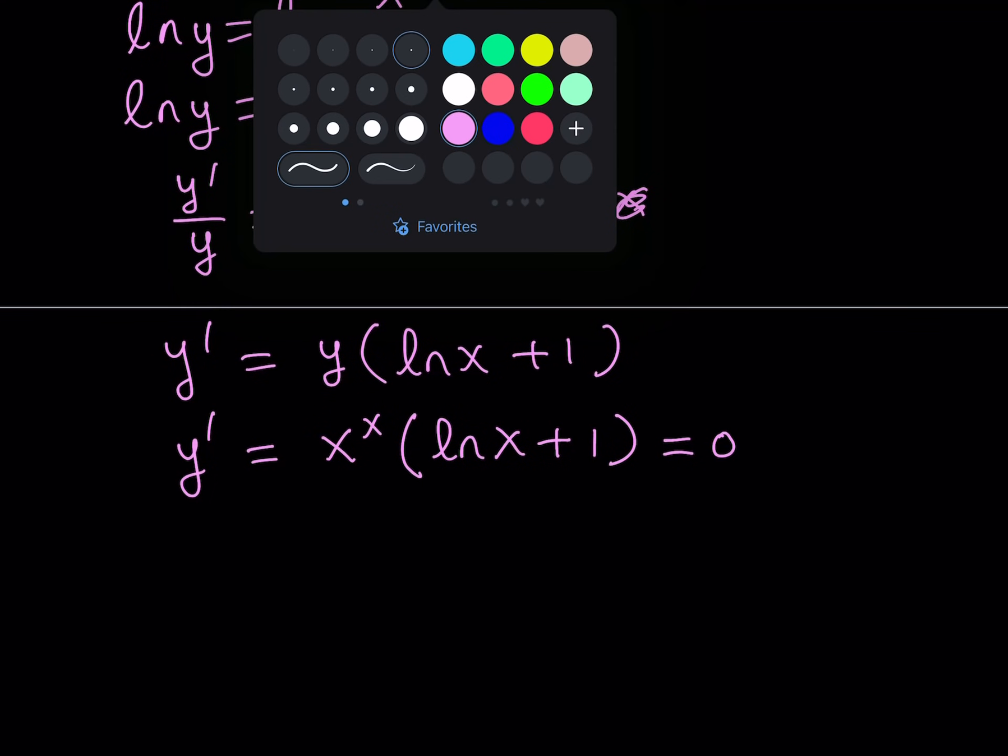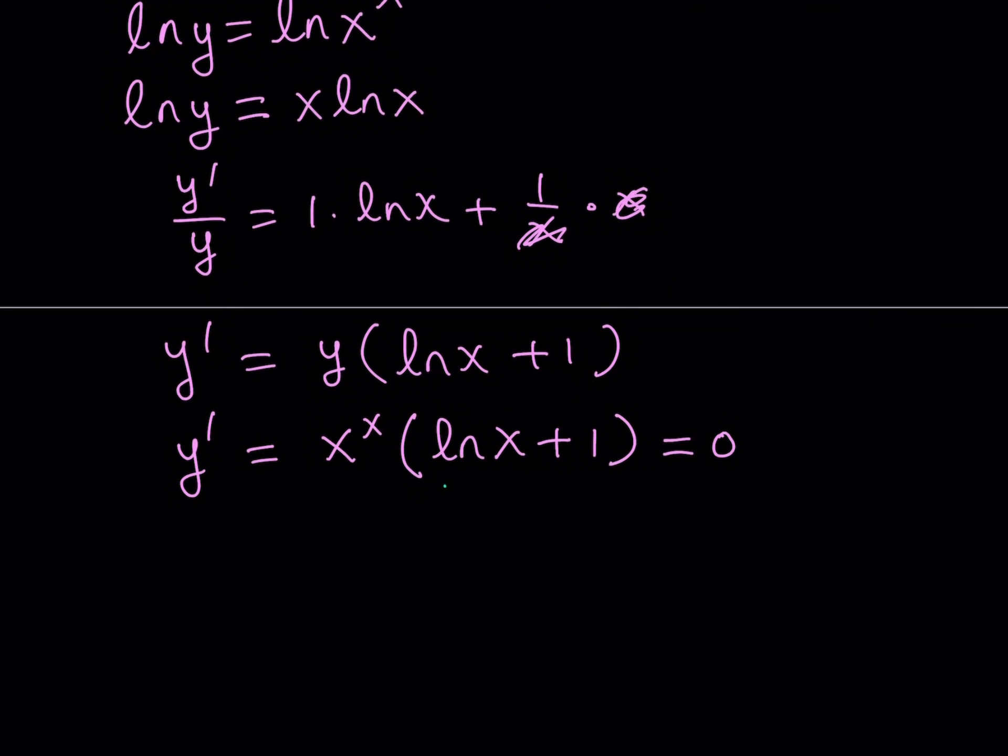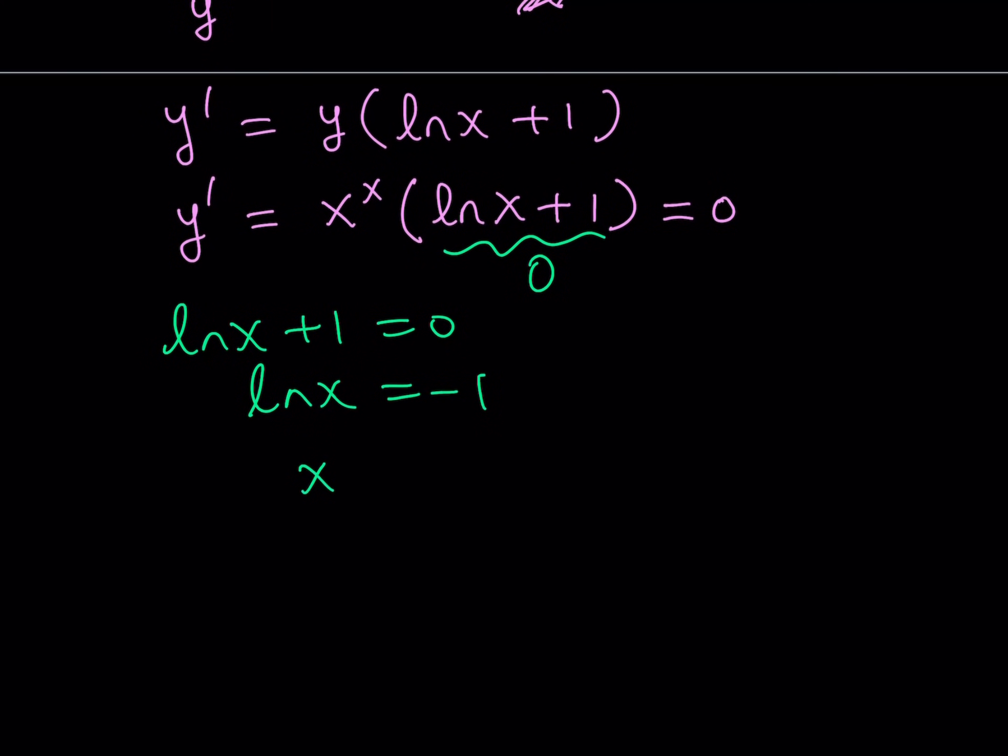If you know otherwise, you can just go ahead and write it down. But we're going to be setting this equal to 0. And from here, it's very easy to solve ln x plus 1 is equal to 0. ln x is equal to negative 1. And this gives us x equals e to the power of negative 1, which is 1 over e.